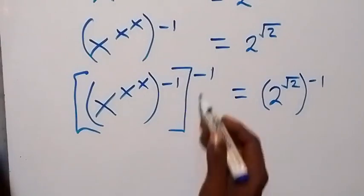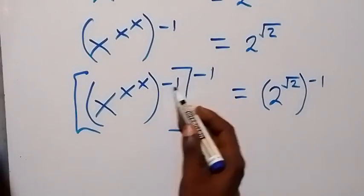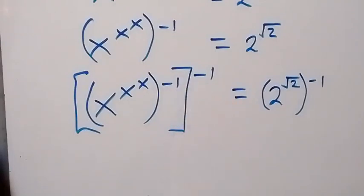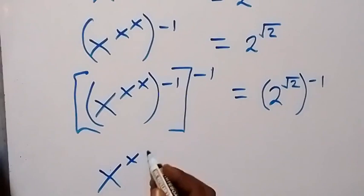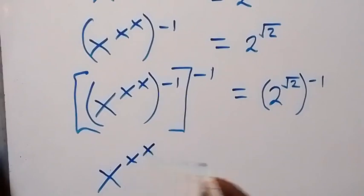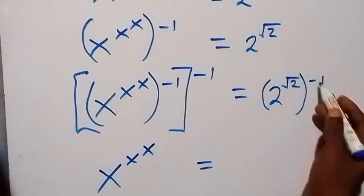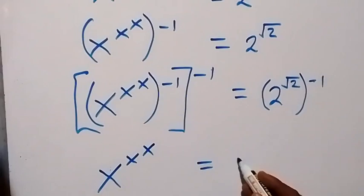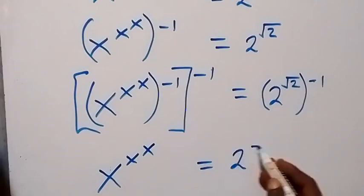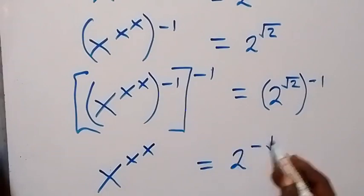On this side, the two minus powers multiply each other and return to plus, and we are left with x raised to power x, raised to power x, equals 2 raised to power minus root 2.